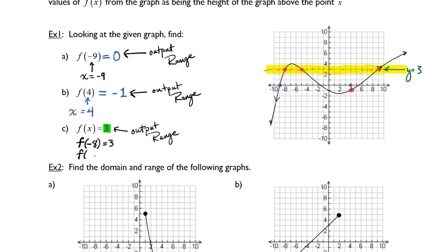So I would say f of negative 8 equals 3, f of negative 5 equals 3, and finally f of 9 equals 3. Another way I could write this is x equals negative 8, negative 5, and 9. Those are the 3 inputs that will give me 3 as an output or a range value.